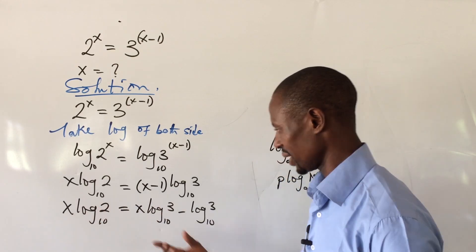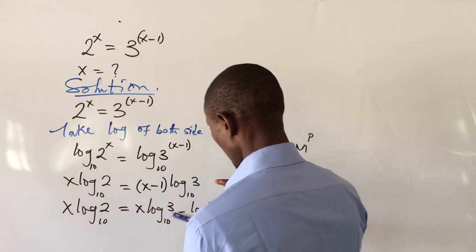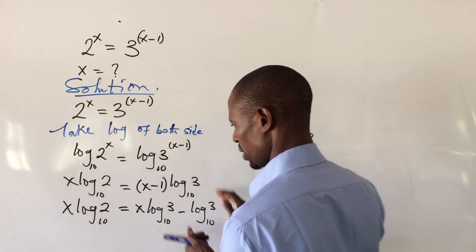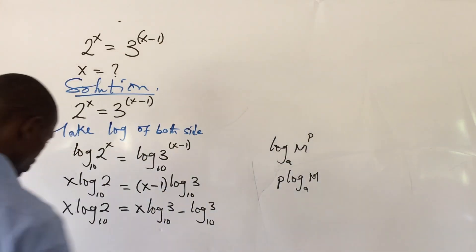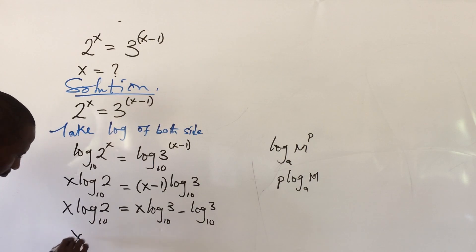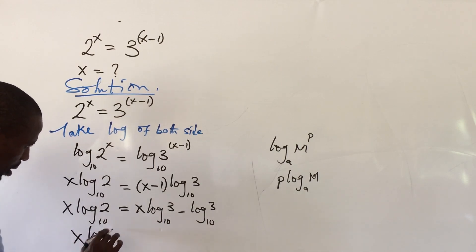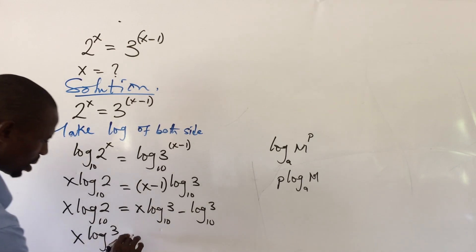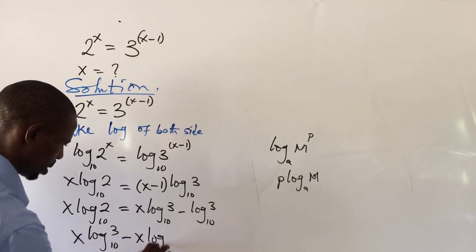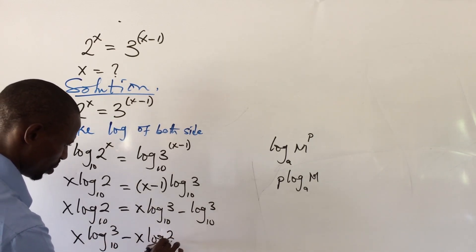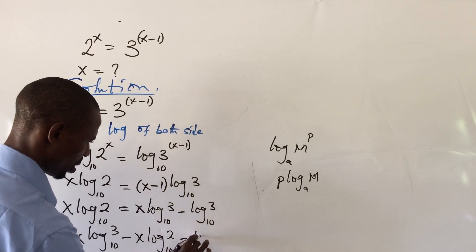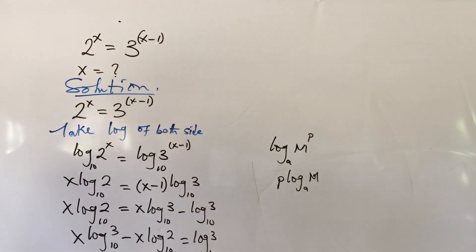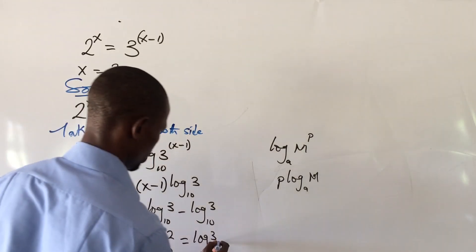We have a term carrying x on this side and a term carrying x on the other side, so let's collect like terms. We send the x log 3 term to this side and rearrange to get: x log 3 (base 10) minus x log 2 (base 10) equals log 3 (base 10).